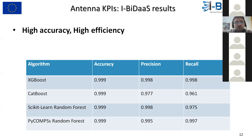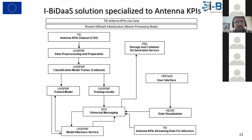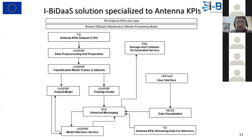The results show accuracy numbers that should be as close to one as possible and show very good results. From the integration perspective, the IBDAS solution can be specialized to the antenna KPIs use case. This use case works in a stream processing mode, incorporating several IBDAS technologies such as Aegis Advanced Visualizations, Universal Messaging, and algorithms developed by the University of Novi Sad.